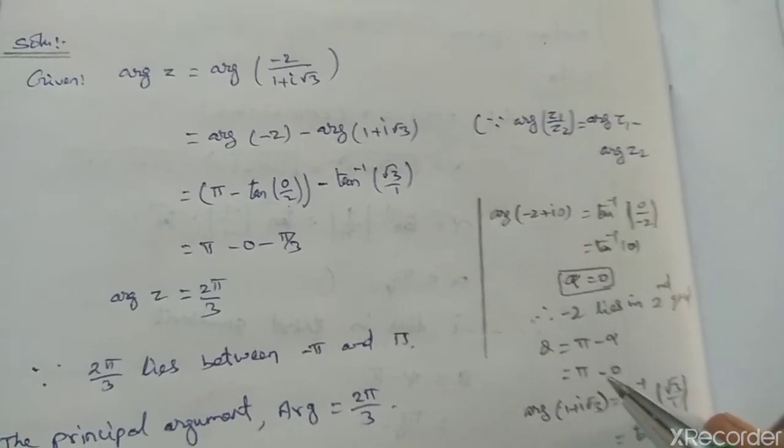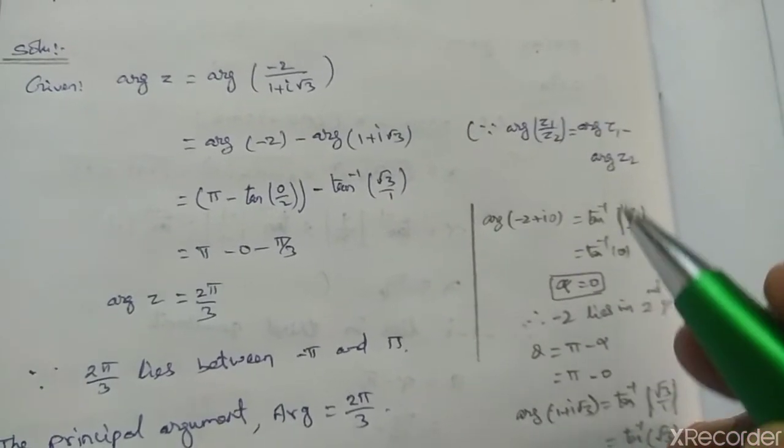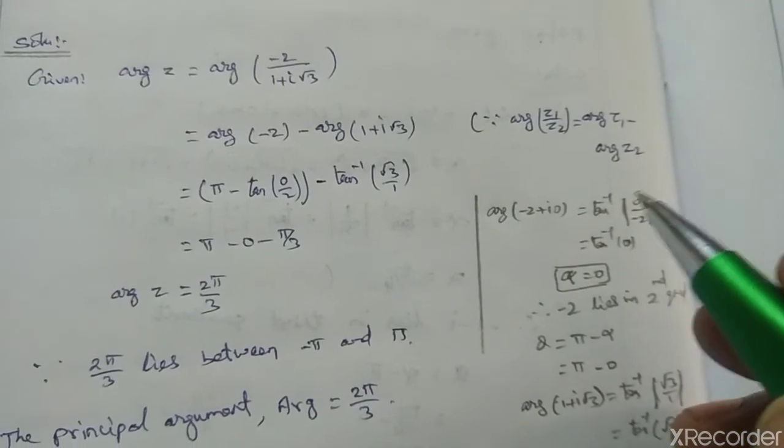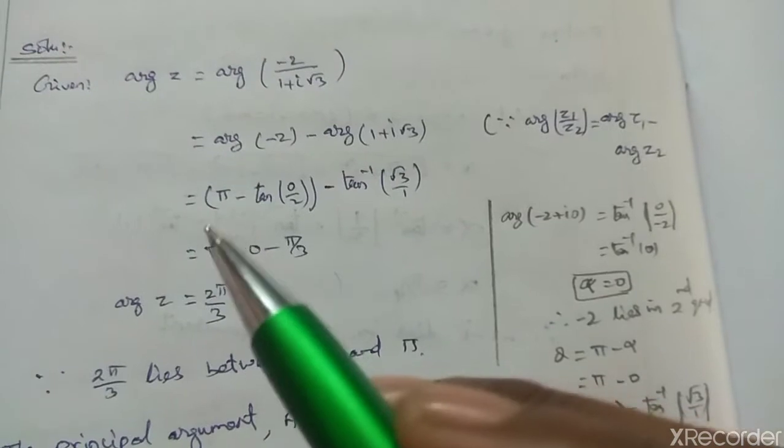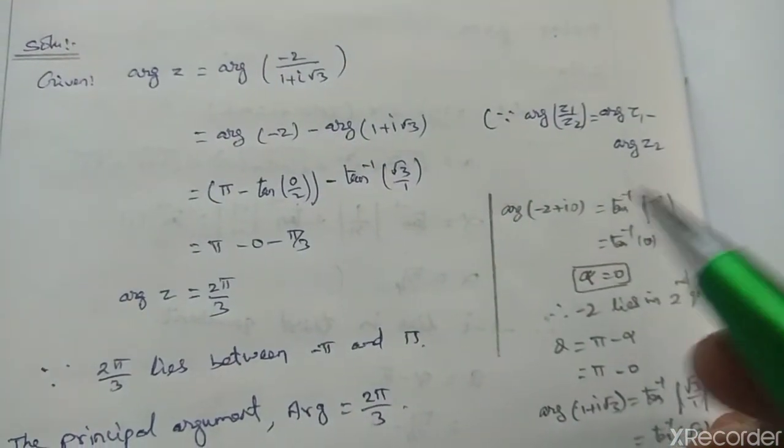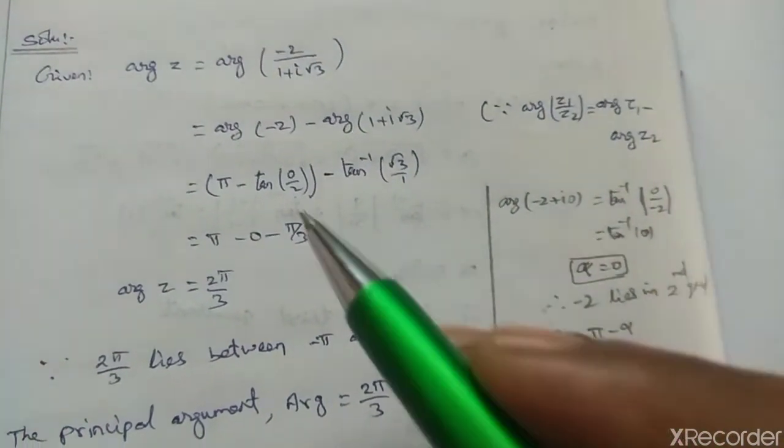Pi minus alpha equals pi minus tan inverse of 0 by minus 2 equals pi minus 0. Tan inverse of b by a equals 0 by minus 2.